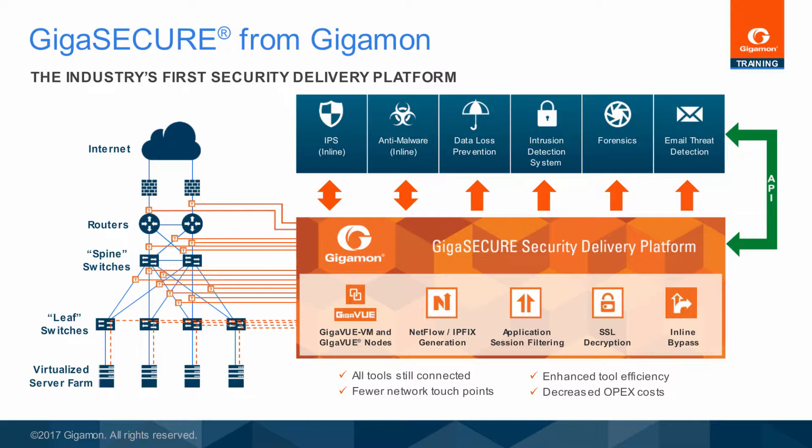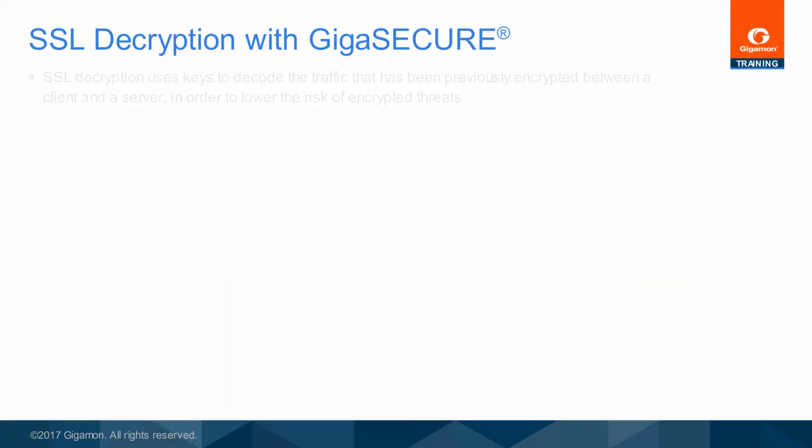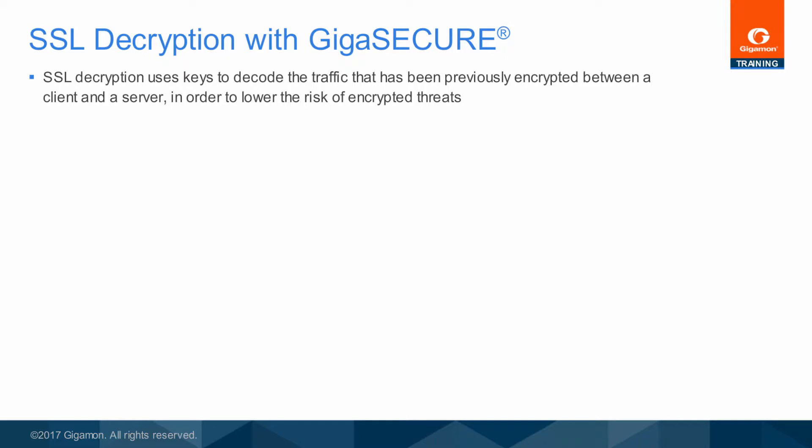In particular, the GigaMon GigaView H-Series nodes support Secure Sockets Layer SSL Decryption. GigaSecure is the best way to deploy security applications to improve their performance, reach, and return on investment. GigaSecure SSL Decryption allows the network to peek into encrypted traffic and detect potential threats.